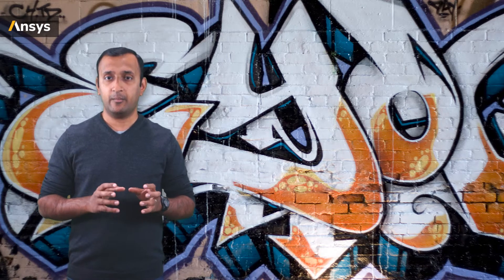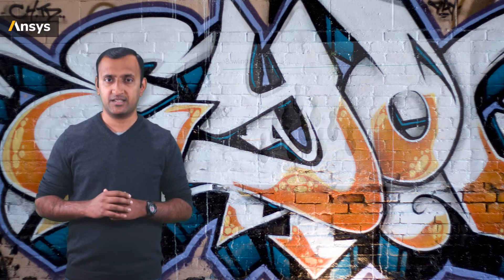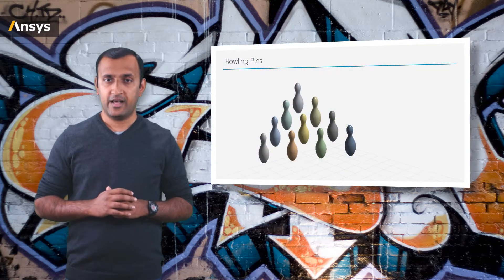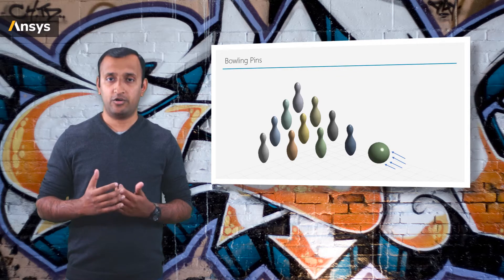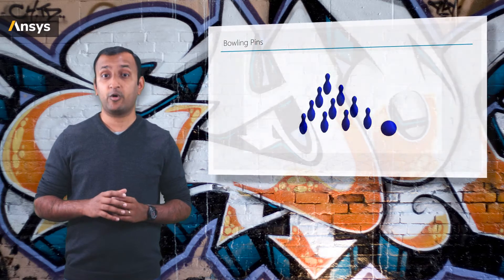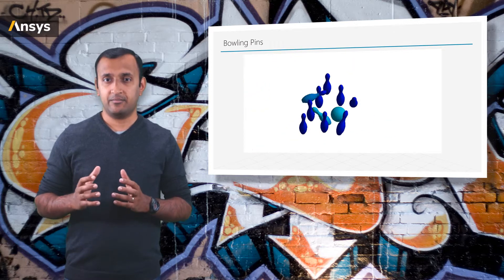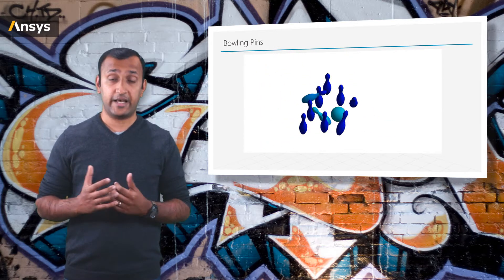Since the ball and the pins are all individual objects, there must be a contact formulation defined between them to enable this transfer of momentum. Let's simulate this game. We arrange the pins in the prescribed format and then impart an initial velocity to the ball and let it roll onto the pins. When we define a contact interaction between them, the momentum is properly transferred to the pins and we see them getting dislodged, which is as expected.